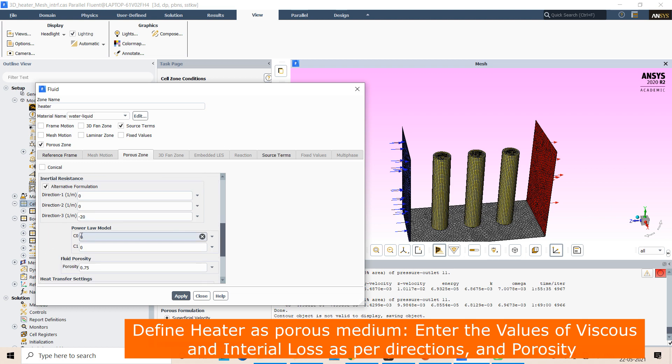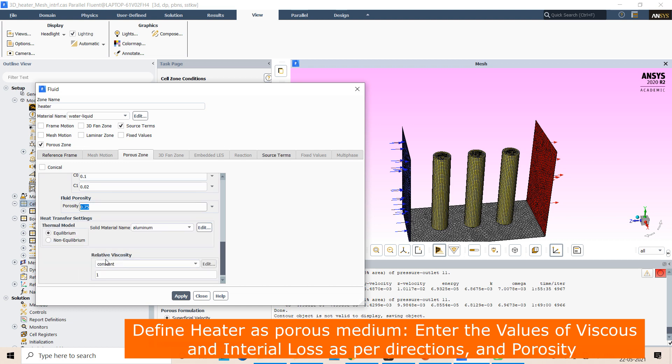As per calculation, define the inertial resistance. Then give the power law coefficient if it is available. You can give the porosity as 0.75. Next, for the thermal model, I am selecting equilibrium. There is equilibrium of heat transfer from solid to fluid or fluid to solid. Then apply.